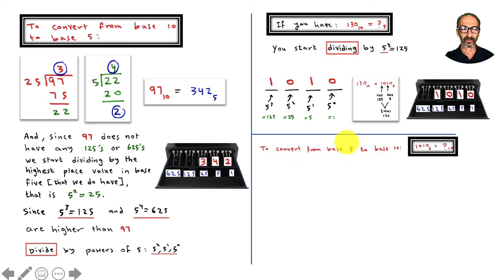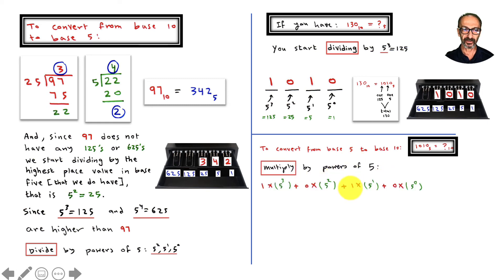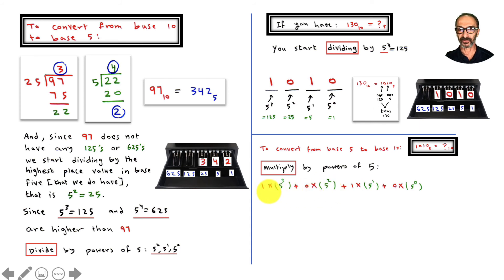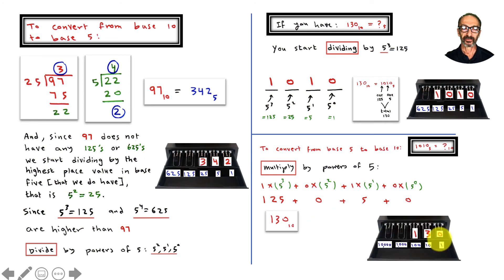To convert back from 1010 base 5 to base 10, just multiply by the powers of five. Count backward to assign exponents: 0, 1, 2, 3. So it's 1 times 5 to the third, plus 0 times 5 to the second, plus 1 times 5 to the first, plus 0 times 5 to the zero. That gives 125 plus 0 plus 5 plus 0, which equals 130 in base 10.